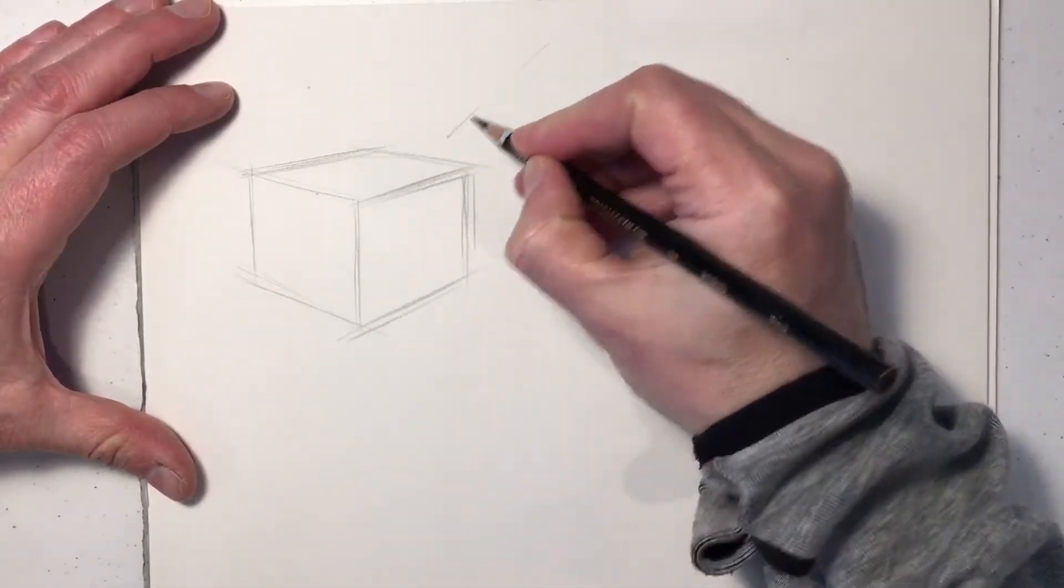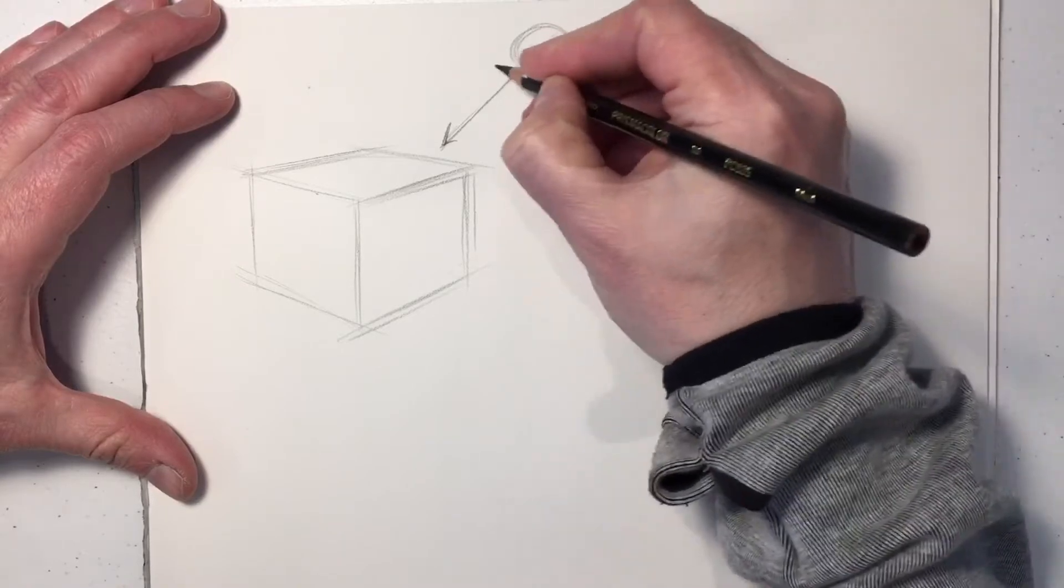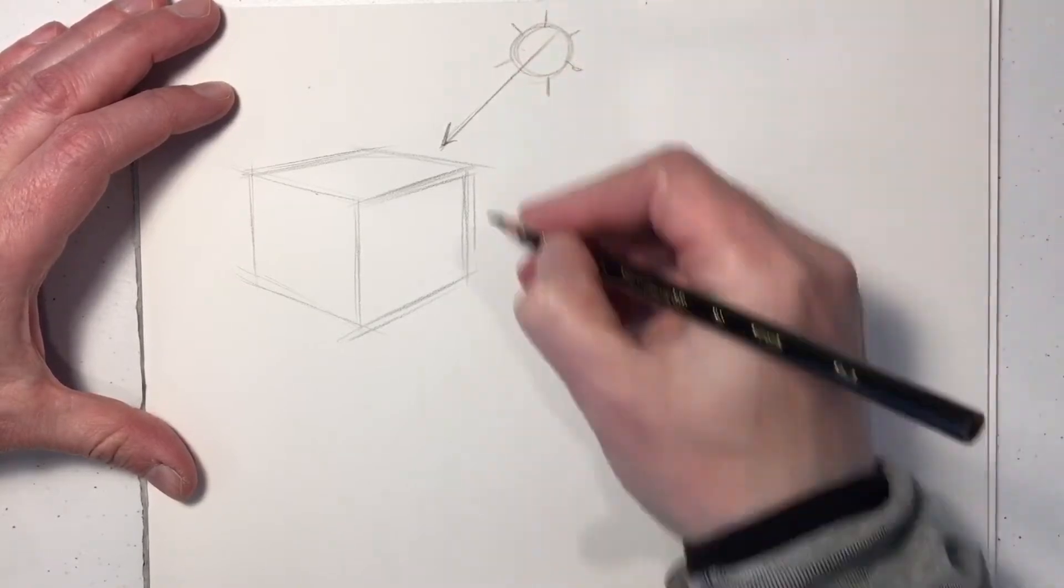Starting with a cube, we're going to establish a light source. This will be a directional light, like the sun.